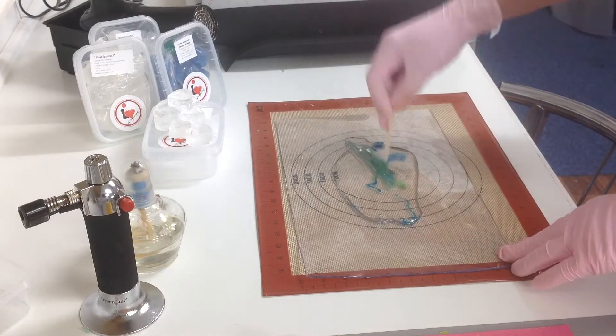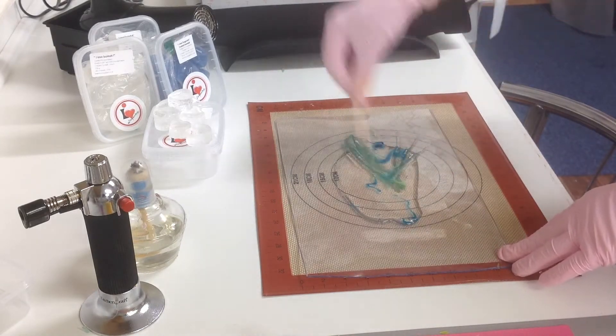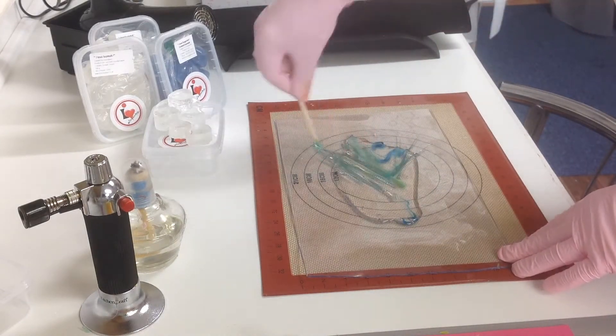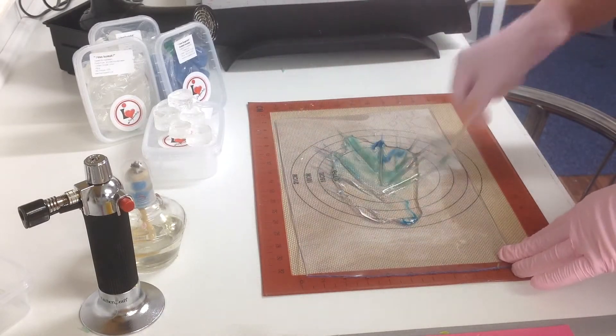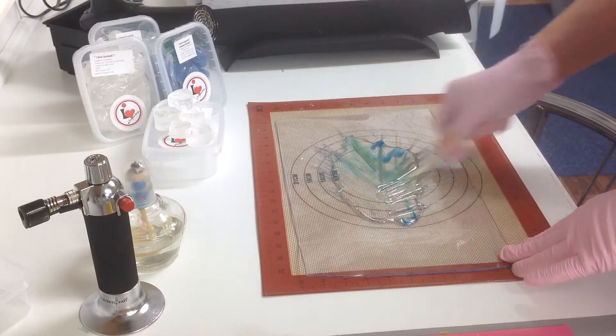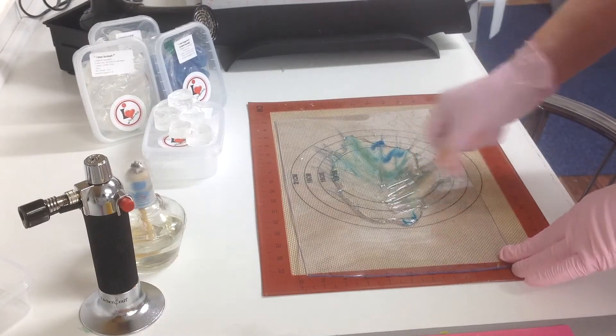I'm using a wooden stick. I'm just going to drag lines to create a spiky looking background plaque. I'm just dragging that hot isomalt.